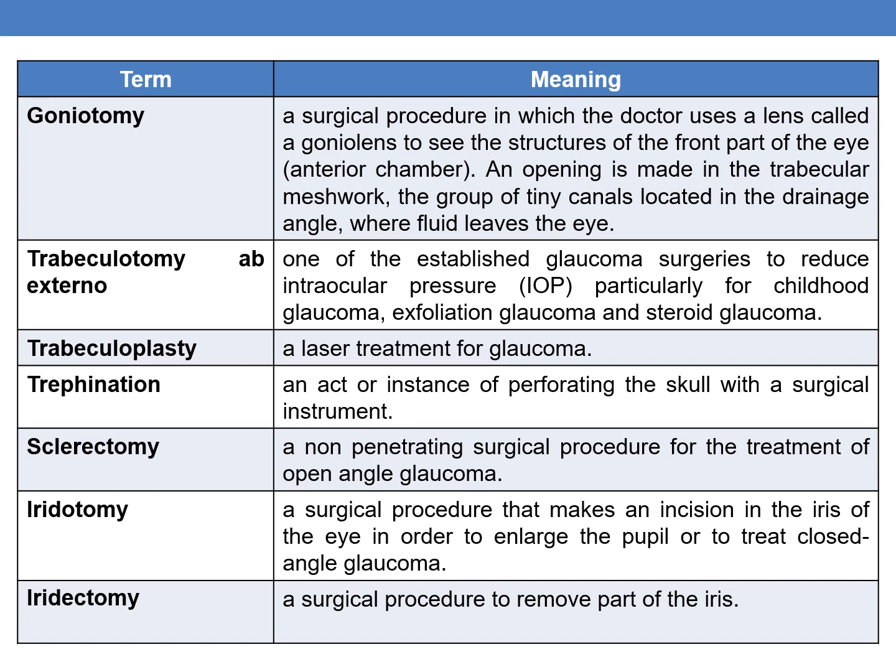The next term is goniotomy. Goniotomy is a surgical procedure in which the doctor uses a lens called a gonio lens to see the structures of the front part of the eye, that is the anterior chamber. An opening is made in the trabecular meshwork, a group of tiny canals located in the drainage angle where fluid leaves the eye.